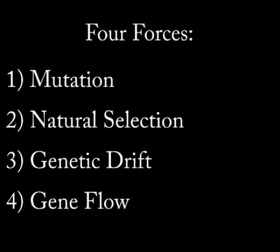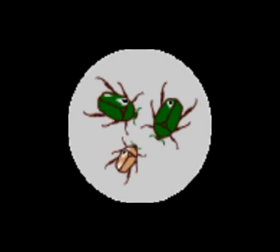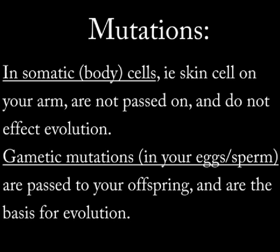To begin with, we have mutation. Mutations are random changes in an organism's DNA. Mutations can occur in several places. For example, it can occur in a somatic cell, which is a cell of your body.